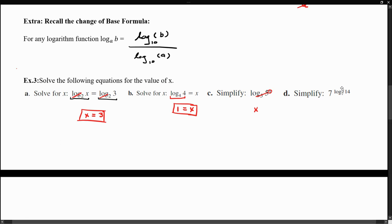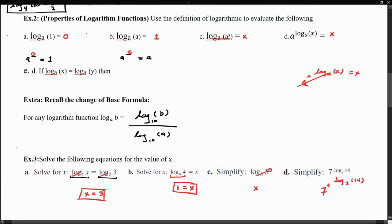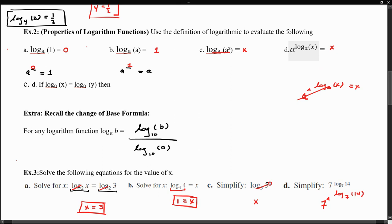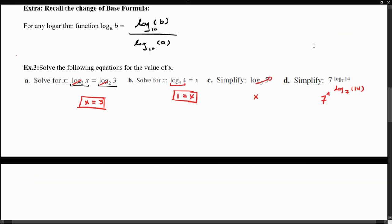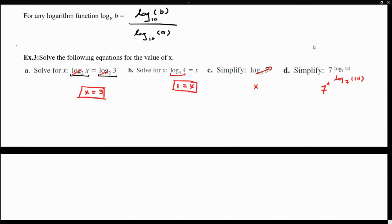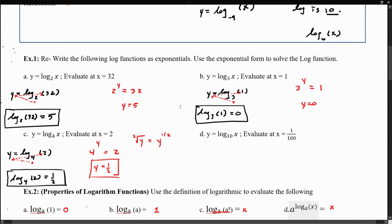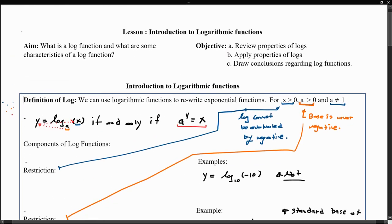The same idea applies to example d. Here we have 7 raised to the exponent log base 7 of 14. This matches the fourth property: if the base of the exponential equals the base of the log, they cancel out and what remains is just the evaluation — so the 7 cancels with log base 7, and what's remaining is just 14. This concludes our lesson on the introduction to logarithm functions.